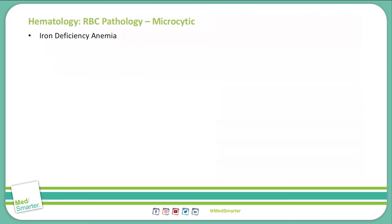So let's start with iron deficiency anemia. Iron deficiency anemia can be caused by two different types of problems. It can be due to a decreased amount of iron in the body, which is often seen with four different types of etiologies. The first being chronic bleeding — from the gut, from anywhere on the body.